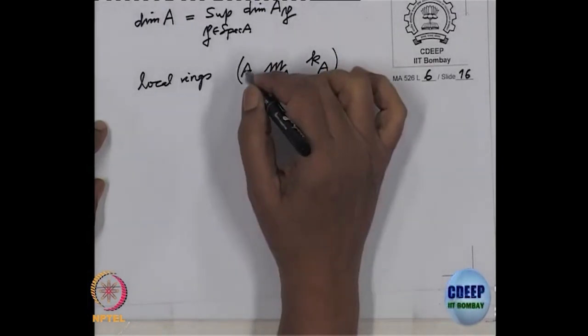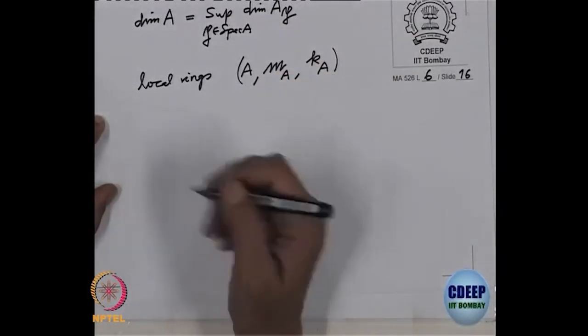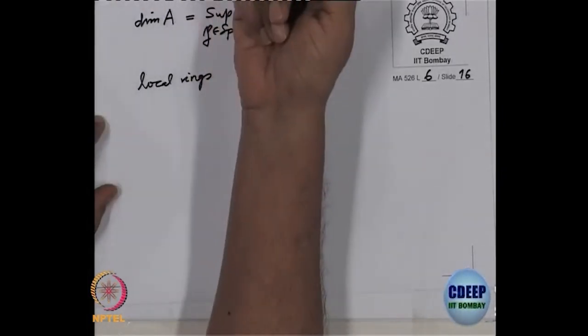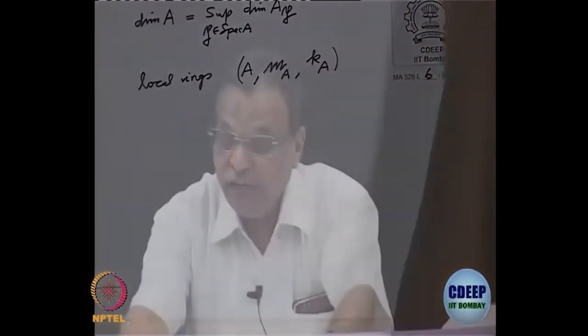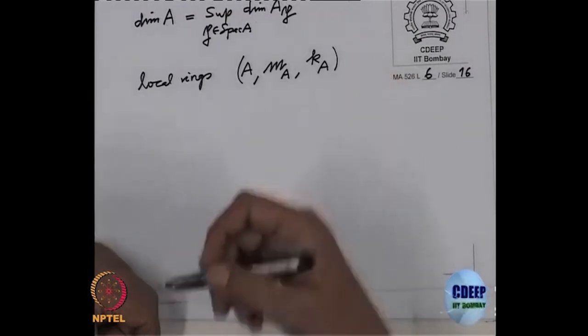So we have such a local ring — this is the maximal ideal, and this is the residue field of M. From this I want to get a graded ring, a standard graded ring, and apply the Hilbert–Poincaré series. Before I forget, this integer D we obtained — we want to prove that it is the dimension; I have not yet proved that. So I will prove that this D is actually the dimension. For this local ring I will attach a graded ring, and for that graded ring we have the theory of Poincaré series, and we get an integer out of that, which is nothing but the Krull dimension. As a consequence, the Krull dimension of a local ring is actually an integer — finite.